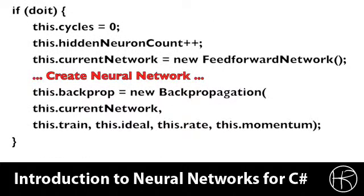If the DOIT variable has been set to true, then that means it's time to create a new neural network. We set the training cycles to zero. We are starting over because we're creating a new neural network. We increase the hidden count by one, and we create a new neural network. We've seen numerous examples of how to create this neural network. We're simply creating a feedforward network structure, as you see just before the red type, and then we create the three layers and add those layers to the neural network.